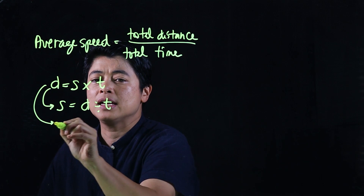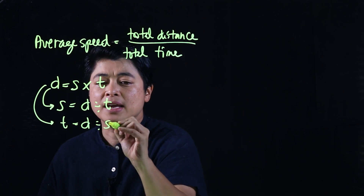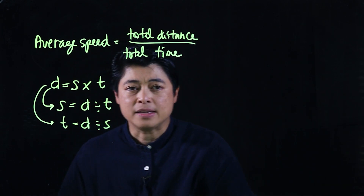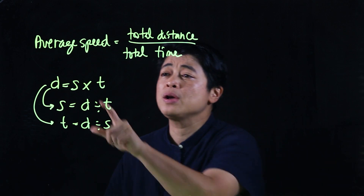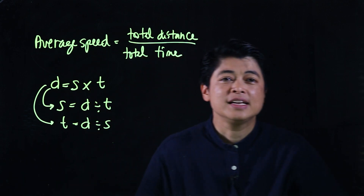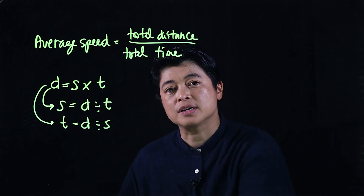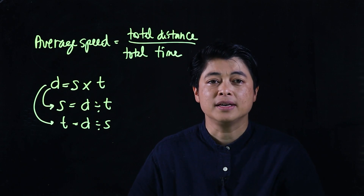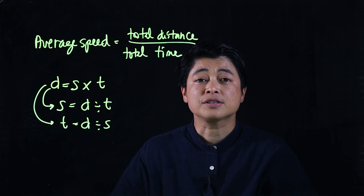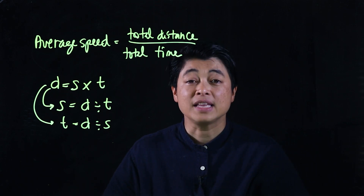Time is equal to distance divided by speed. Knowing one formula is sufficient because the others are just derived from it. Starting with page 15.